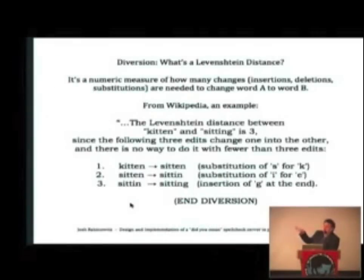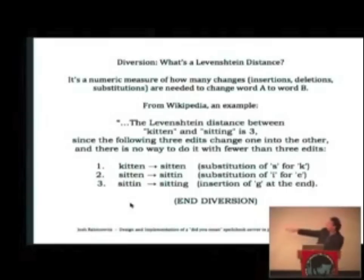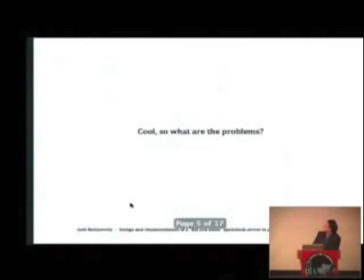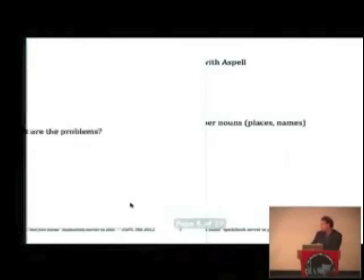A short diversion: Levenshtein distance is basically a numeric measure of how many changes are required to change one word into another. Here's an example of the Levenshtein distance between 'kitten' and 'sitting' — it's a Levenshtein distance of three, because there are three changes required.